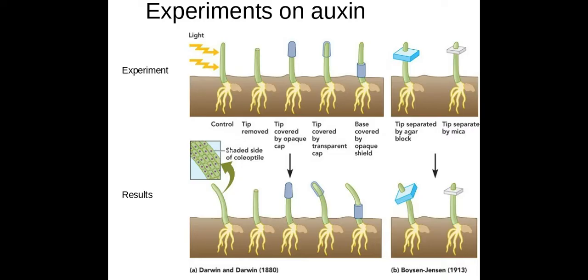The third shoot here has been covered up with an opaque cap, so therefore the light can't get access to the shoot tip. So therefore the auxin is not broken down on the lit side, so the shoot here would just grow up in one direction.